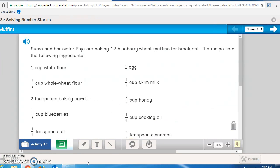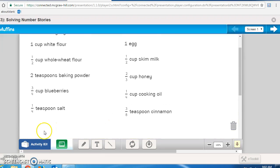Now I'd like you to turn to Math Journal page 232. You will need to complete this page and it is an assessment check-in so you will be bringing it up to me when you get it completed. It says, Suma and her sister Pooja are baking twelve blueberry wheat muffins for breakfast. The recipe lists the following ingredients: one cup white flour, half a cup whole wheat flour, two teaspoons baking powder, three-fourths cup blueberries, and a fourth teaspoon salt, one egg, a half a cup skim milk, two-thirds cup honey, a fourth cup cooking oil, three-eighths teaspoon cinnamon.